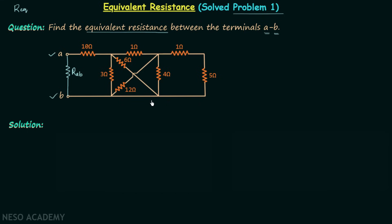Whenever you have to calculate the equivalent resistance, always start from the extreme end. You can start from either end.